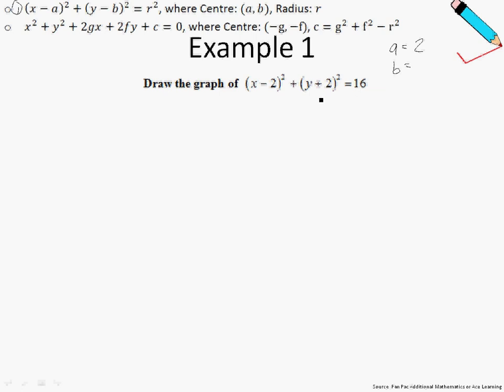Our b, be very careful about this. b is negative 2, because this is y minus minus 2. So b is negative 2 and my r is 4. Why is that so? Because 16 should be r square, and we all know that 16 is 4 square. So therefore r is just 4.